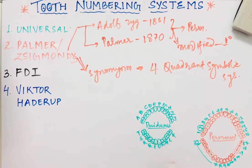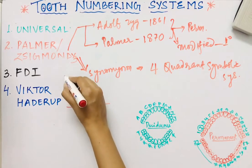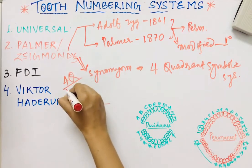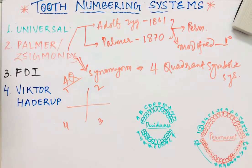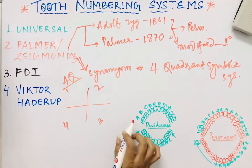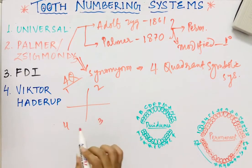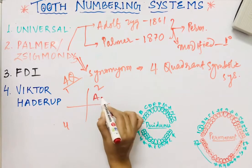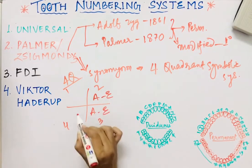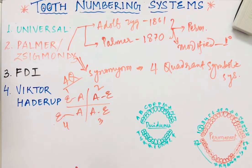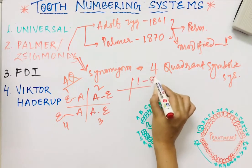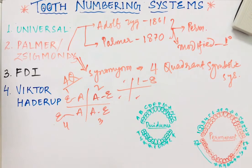In the Palmer system, the arches are divided into four quadrants. For deciduous dentition, each quadrant is numbered from A to E. For permanent dentition, each quadrant is numbered 1 to 8. So in every quadrant, for permanent teeth it is 1 to 8, and for deciduous it is A to E.